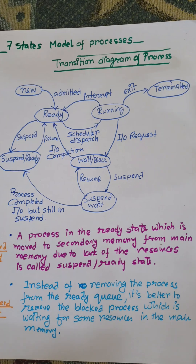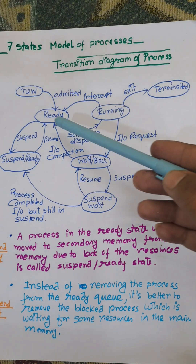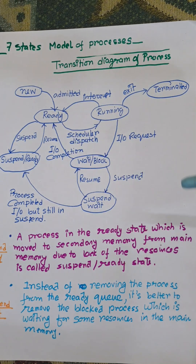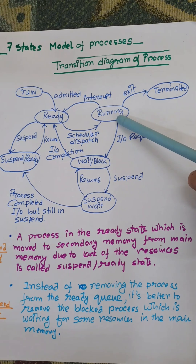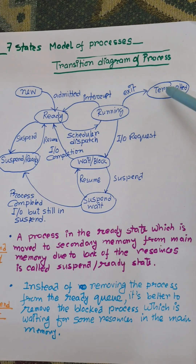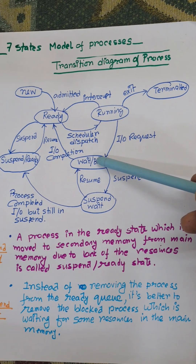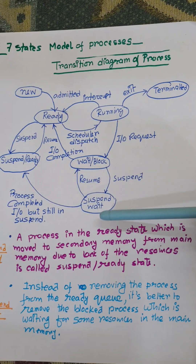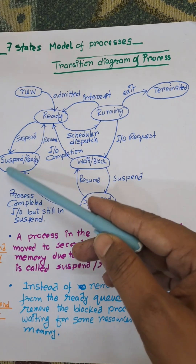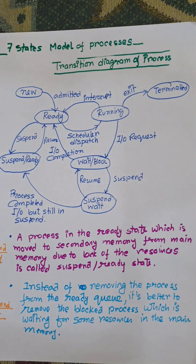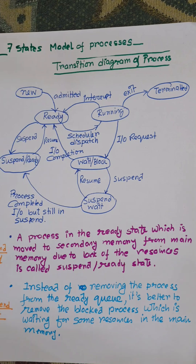This is the transition diagram of a process. The 7 state model includes: new (the first state), ready, running, terminated, wait or block, suspend wait, and suspend ready. So these are the total 7 states.